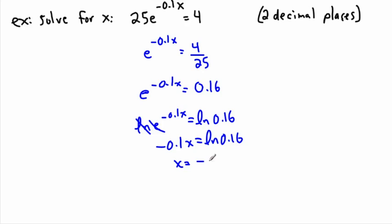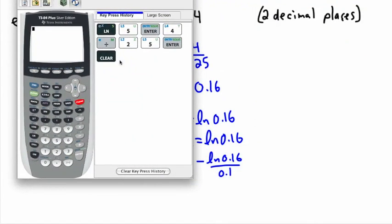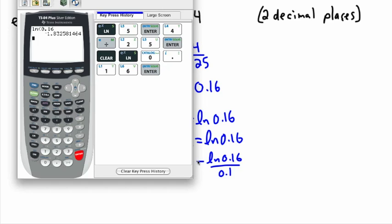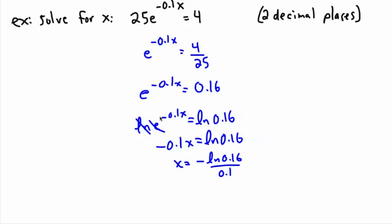Dividing by negative 0.1 means the top becomes negative, so it's negative ln of 0.16 divided by 0.1. I calculate natural log of 0.16 — it's a negative value. A negative times a negative gives a positive, so I multiply by negative 1, then divide by 0.1. I get 18.33 to two decimal places, so x is approximately 18.33.